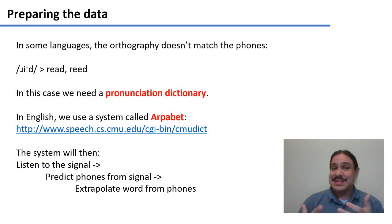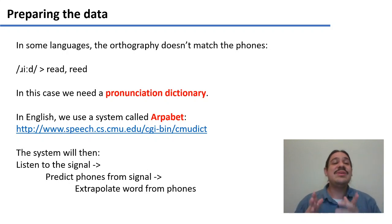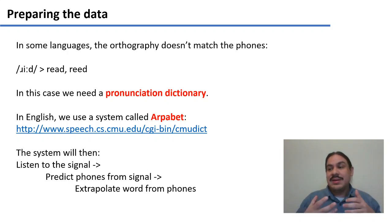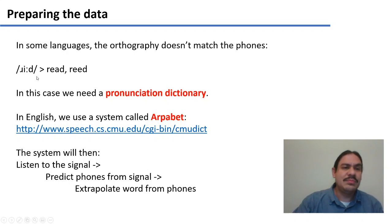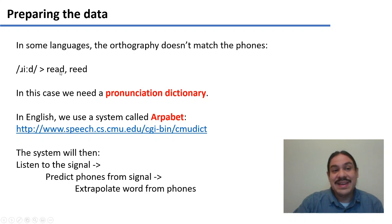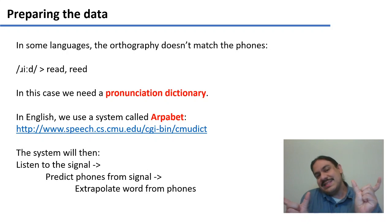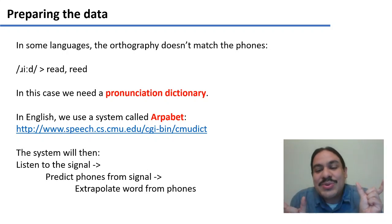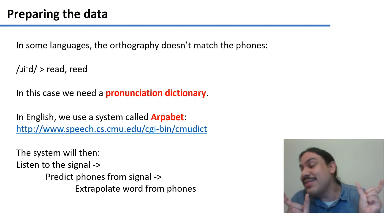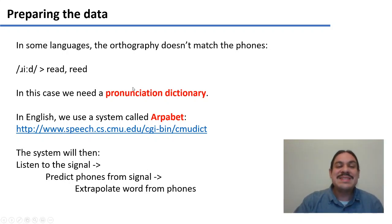However, in many languages the orthography or writing system doesn't really represent the phones. It represents a more abstract unit like phonemes, or the relationship between writing and sound is opaque, like in Chinese characters. In English, for example, the sequence 'read' could be spelled R-E-A-D or R-E-E-D. Because what we get from the system is phones and what we need is the orthographic representation, we need some sort of middle file — we're going to call this a pronunciation dictionary.